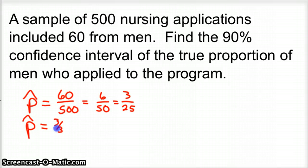So that's our sample proportion. And so we'll convert this, let's just go ahead and convert this to a decimal. 3 over 25 is 0.12. We'll go ahead and convert that.